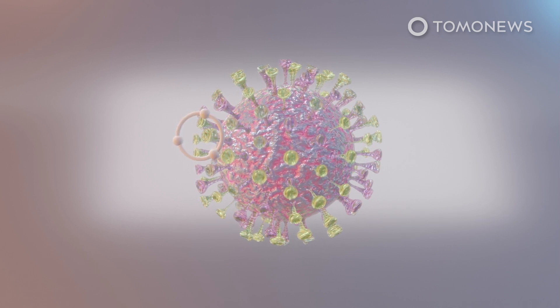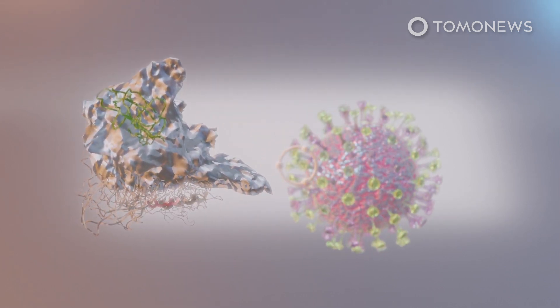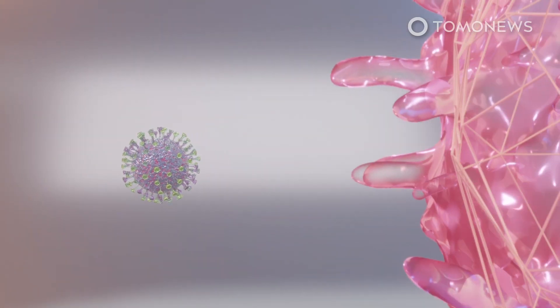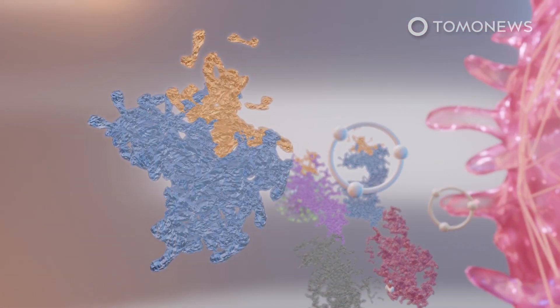A previous study published in Science found the virus' spike protein has two receptor-binding domains, or RBDs, facing downward and another facing upward. These allow the virus to bind with and invade human cells.